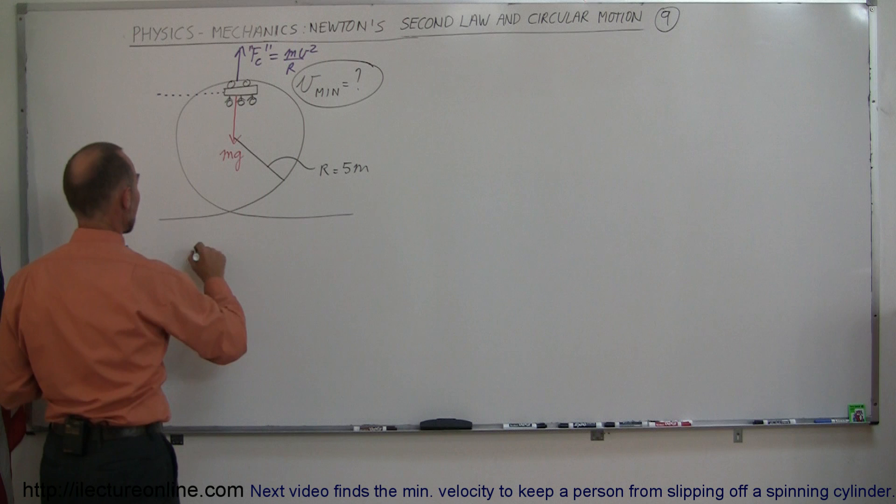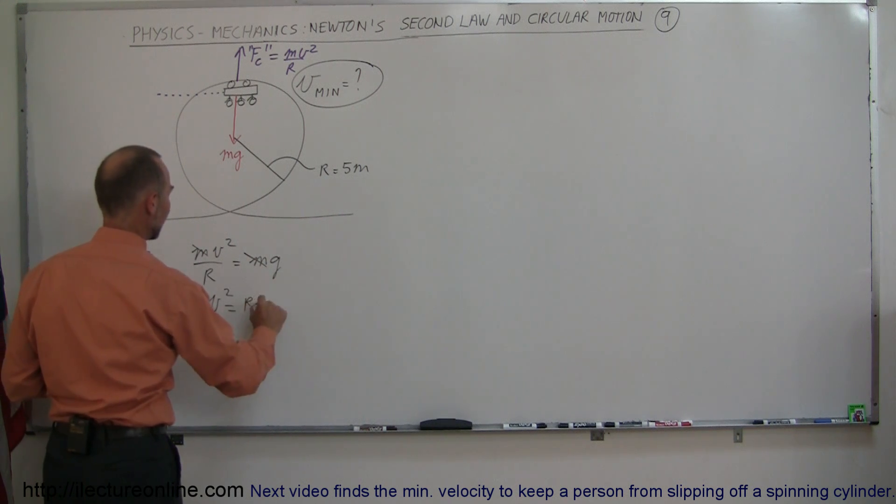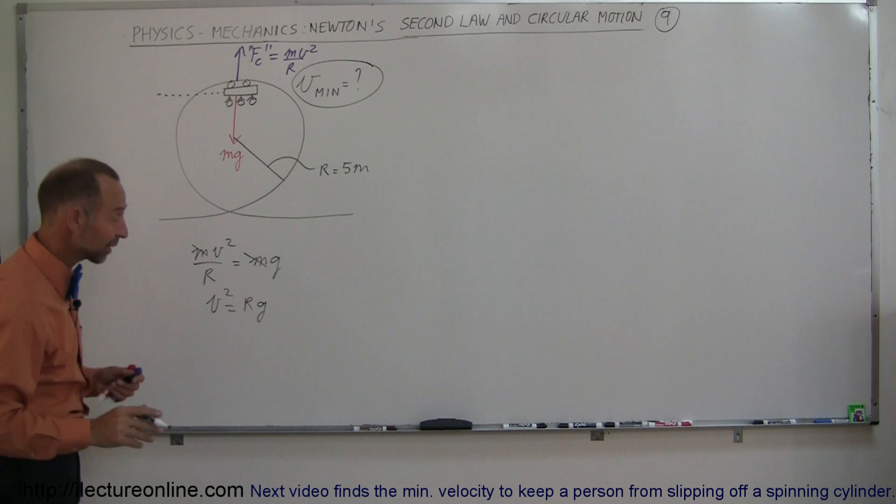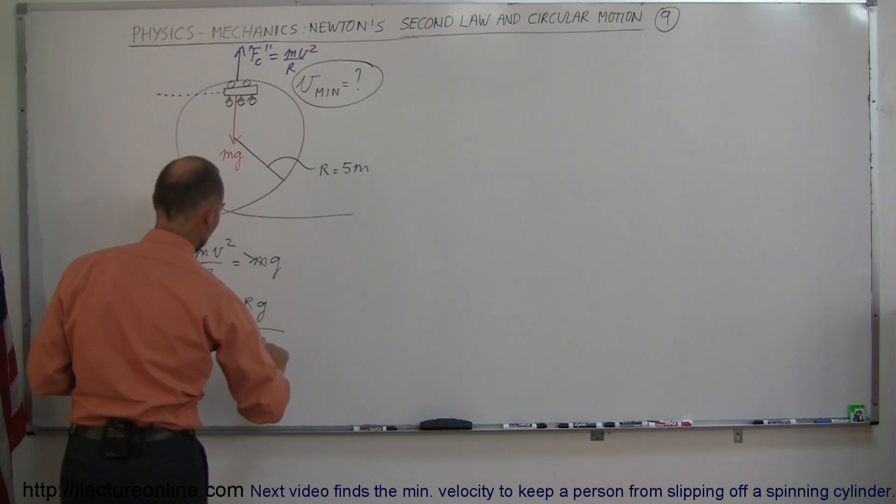So we set mv² over r equal to mg, and the m's cancel out. Now we have v² equals rg. That looks familiar, just like the previous problem. And so v equals the square root of rg.